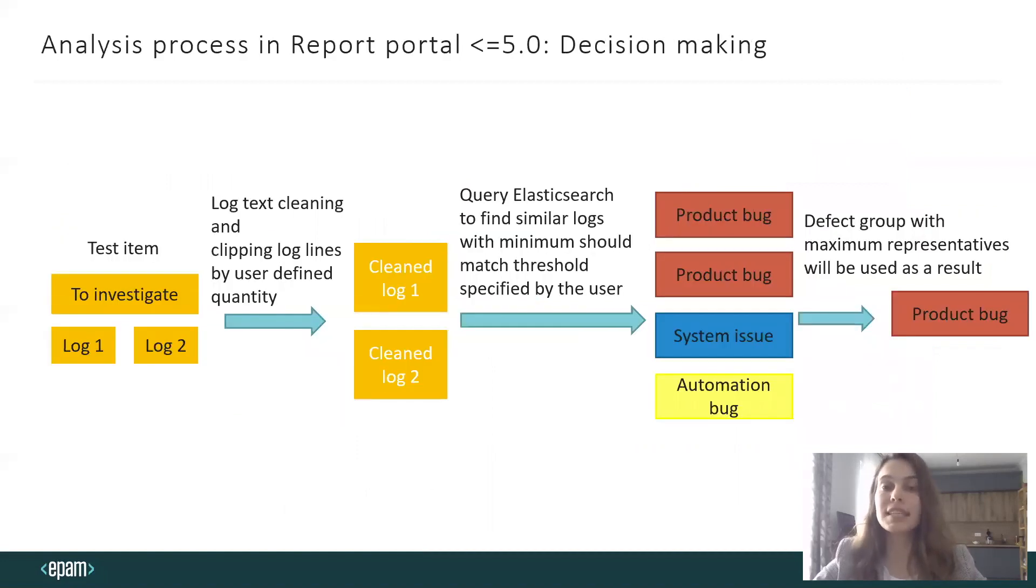When a new to-investigate test item appears, we clip the log lines by user-defined quantity and try to find similar ones. The Elasticsearch results are regrouped by defect type. After that, the defect type with maximum representatives will be used as the result. For example, here we've chosen the product bug as it has two representatives.